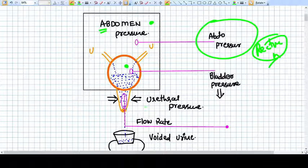Now, what if we want to know the specific pressure produced by the detrusor muscle? Then what we have to do is subtract abdomen pressure from the bladder pressure or vesicle pressure.